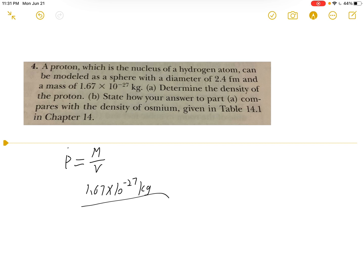And the volume, because it's a proton, so we will use the formula to find the spherical volume, which would be V equals 4 third pi r cubed, which r is the radius.